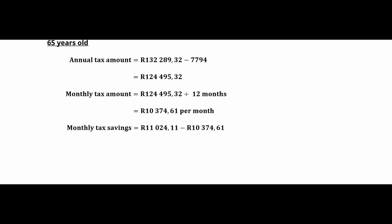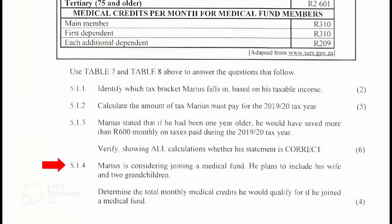If Marius were one year older, he would have saved R11,024.11 minus R10,374.61, which equals R649.50 per month. Since R649.50 is more than R600, his statement is correct.